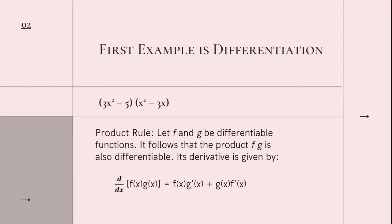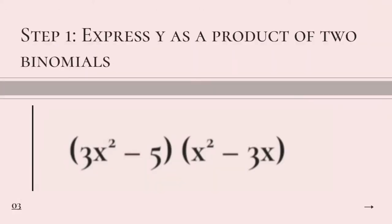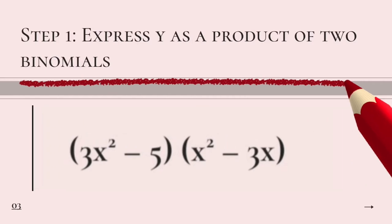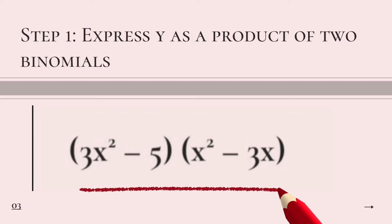Our first example is the differentiation of 3x squared minus 5 times x squared minus 3x and we are going to use the product rule. Let f and g be differentiable functions. It follows that the product f, g is also differentiable. Its derivative is given by this formula. Solution, step 1. Express y as a product of two binomials. y is equal to 3x squared minus 5 times x squared minus 3x.